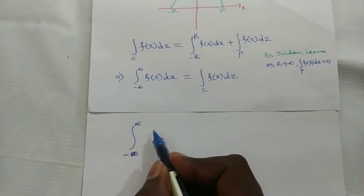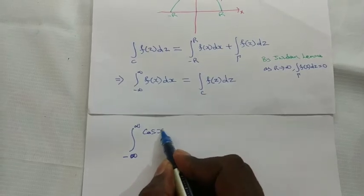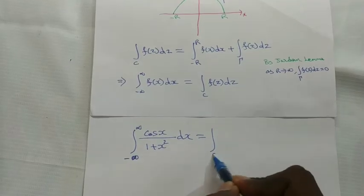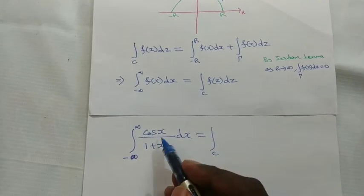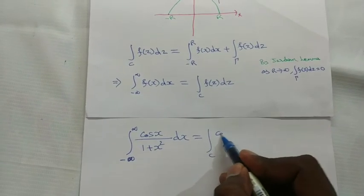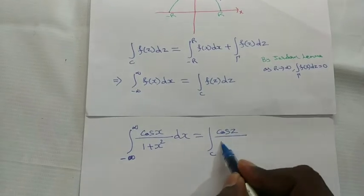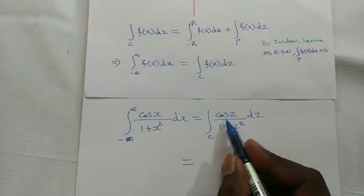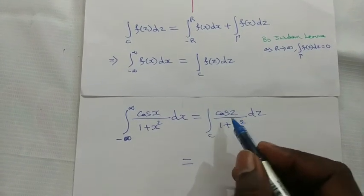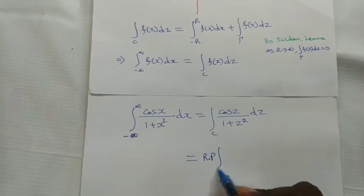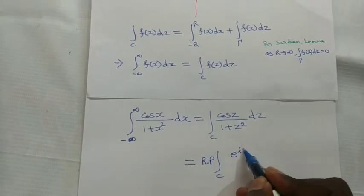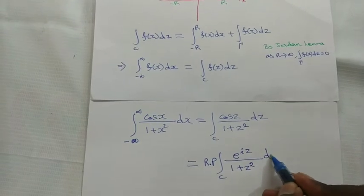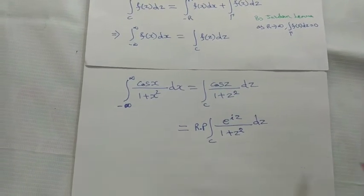So the integral from minus infinity to plus infinity of f(x) dx equals the integral over C of f(z) dz, where f(x) is cos x divided by (1 plus x squared). Converting x to z, we get cos z divided by (1 plus z squared), but cos z is the real part of e to the power iz, so we write the real part of e^(iz) divided by (1 plus z squared) dz.